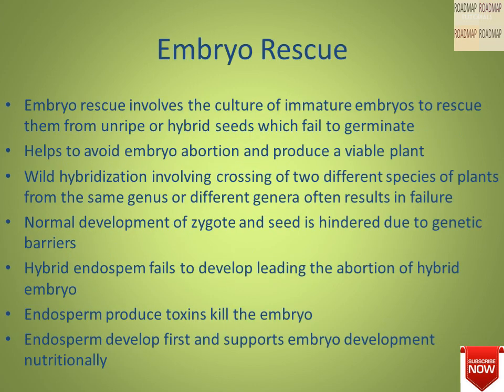Embryo rescue involves the culture of immature embryos to rescue them from unripe or hybrid seeds that fail to germinate. It helps to avoid embryo abortion and produces a viable plant. Wild hybridization involves crossing two different species of plant from the same genus or different genera, which often results in failure of normal development of the zygote, and seed development is hindered due to genetic barriers.